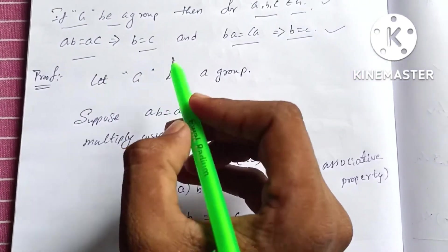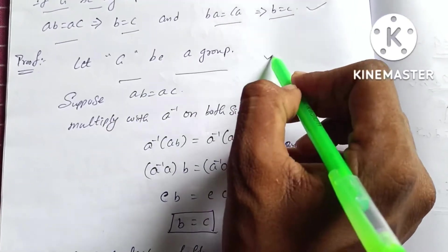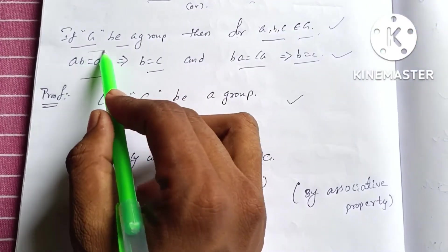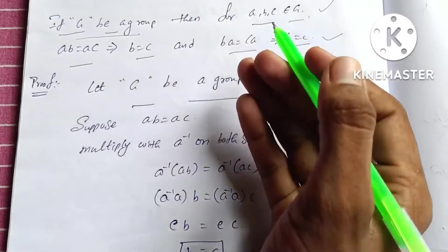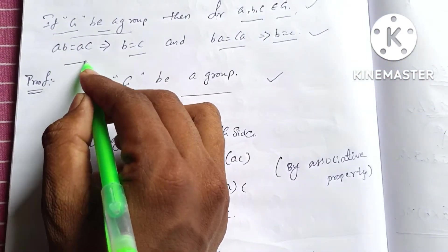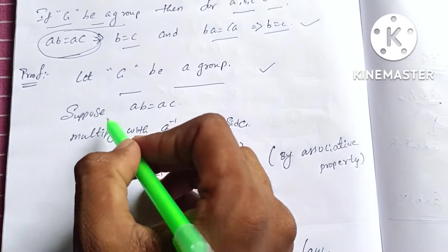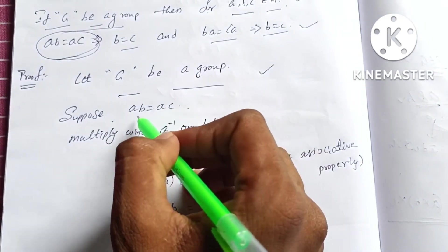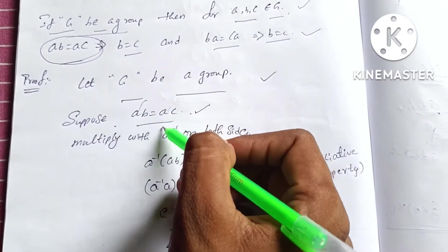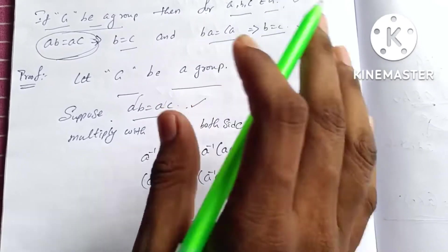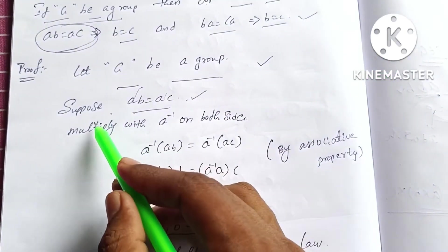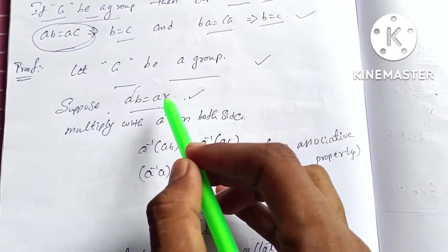So, let's see if G is a group. Suppose first we consider the values. AB is equal to AC. If we have left cancellation, then B is equal to C. So, let's prove it. Suppose AB is equal to AC.